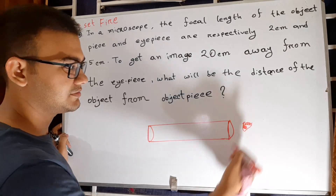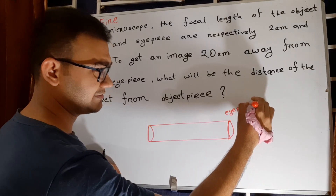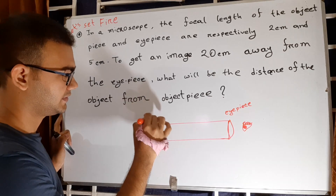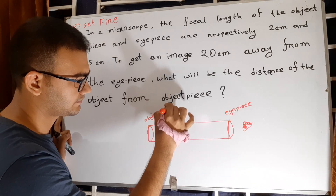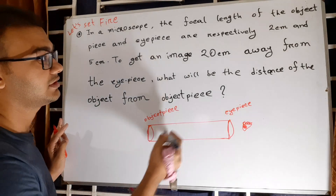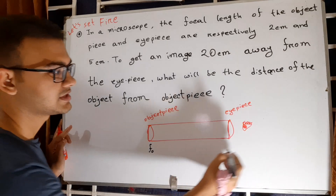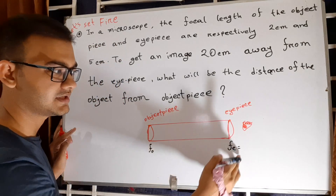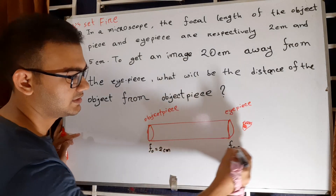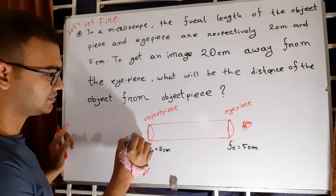You are looking from this side, so this is your eye and this is the eyepiece. You must have seen compound microscopes in your botany laboratory. This other lens is the object piece. The focal length of the object piece, F_O, was given as 2 centimeters, and the focal length of the eyepiece, F_E, was given as 5 centimeters.